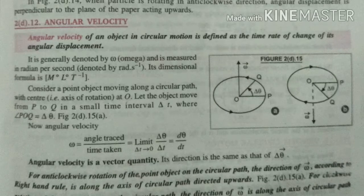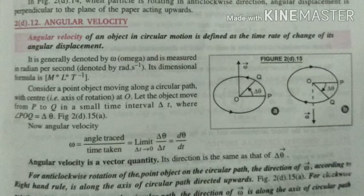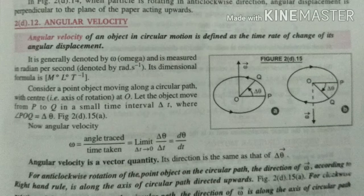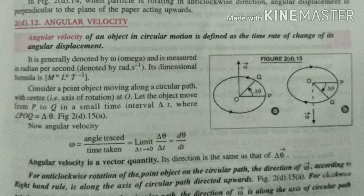Angular velocity of an object in circular motion is defined as the time rate of change of angular displacement. Time rate of change of angular displacement gives you the velocity simple.